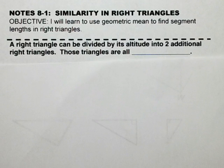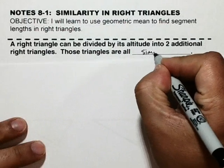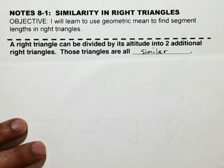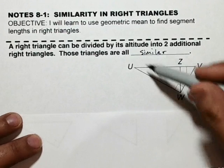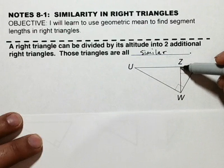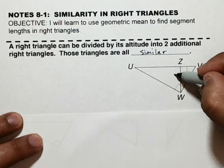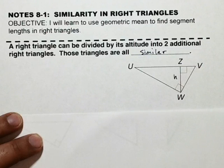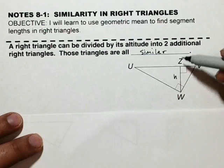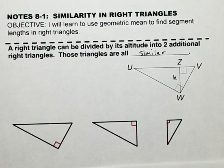A right triangle can be divided by its altitude into two additional right triangles, and those triangles are all similar. So if I have a triangle UWV and I have this altitude from W to Z — altitude is another word for height — drawing that creates three different triangles that are all going to be proportional. They're similar.